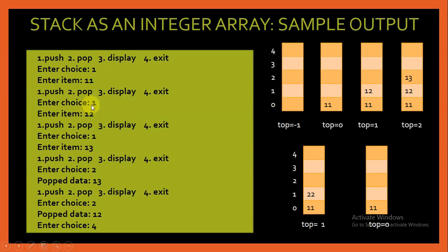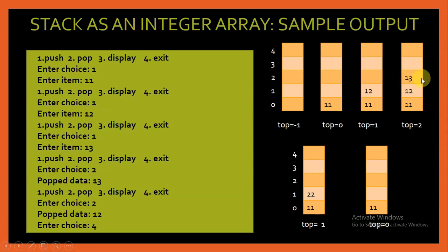Again the menu is displayed. I push one more element with choice 1 and enter data 13. Top is incremented from 1 to 2 and item 13 is inserted at index number 2. Now the menu is displayed again. This time instead of pushing, I want to pop data, so I input choice 2. The popped data 13 is displayed, and top becomes 1 — it was decremented from 2. 13 has been popped from the stack.